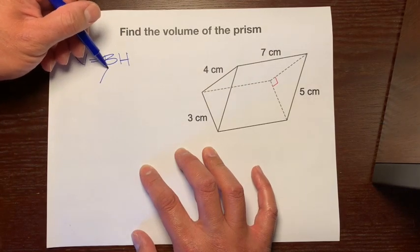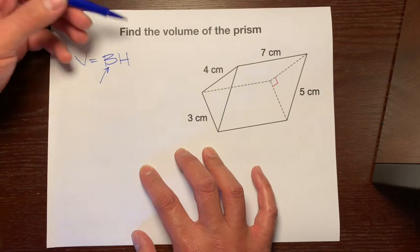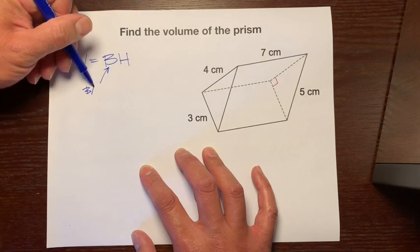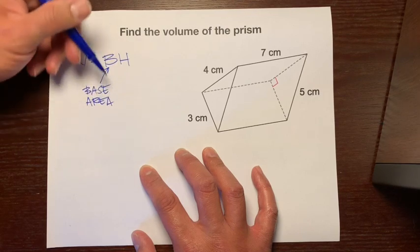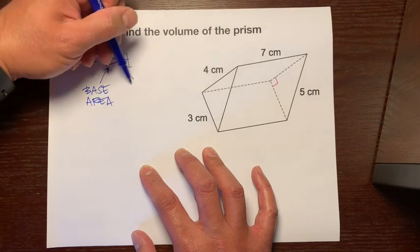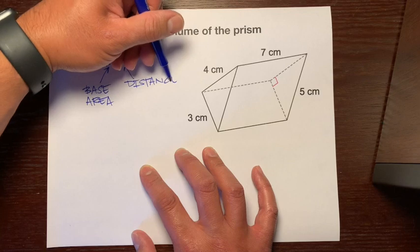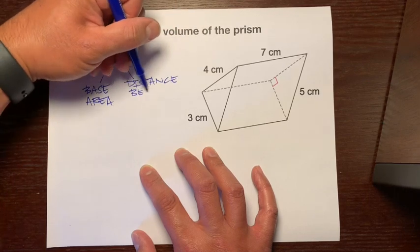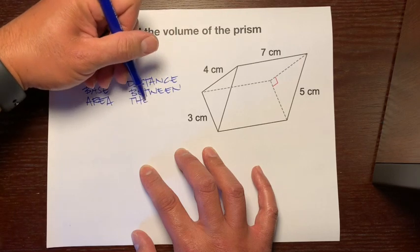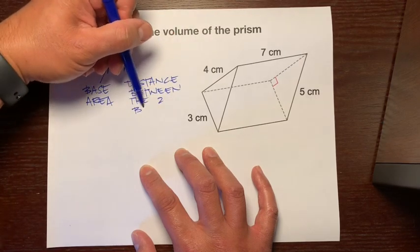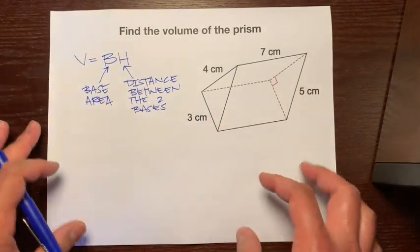Let's put this in our notebooks. Let's make a power card on it. Volume of any prism is base area times the distance between the two bases. This will work for any prism.